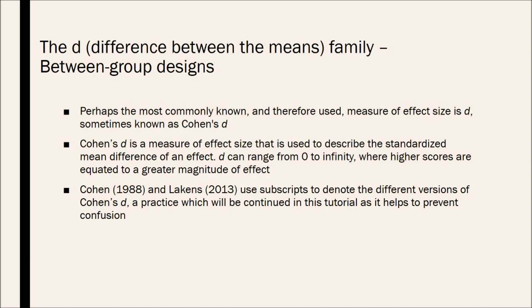Cohen's D is a measure of effect size that is used to describe the standardized mean difference of an effect. Cohen's D can range from zero to infinity, where higher scores are equated to a greater magnitude of difference. Cohen in 1988 and Likens in 2013 used subscripts to denote the different versions of Cohen's D, and I'll be continuing to use that practice in this tutorial, as it helps prevent confusion.